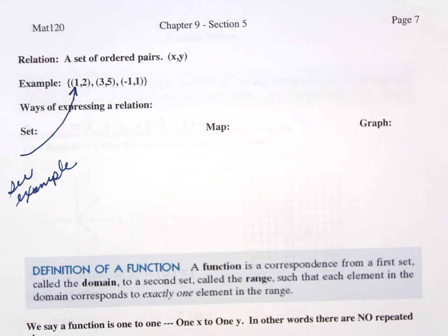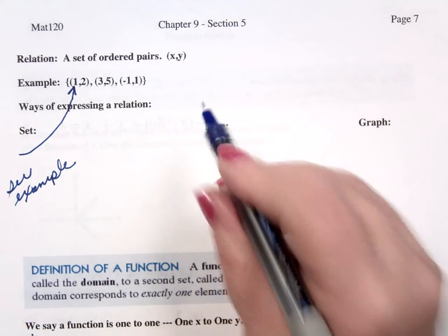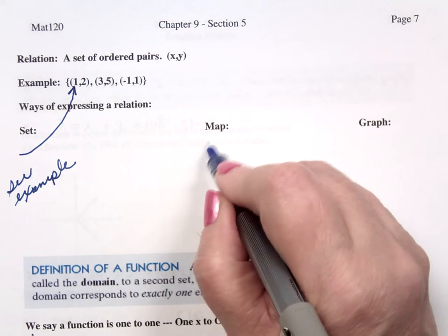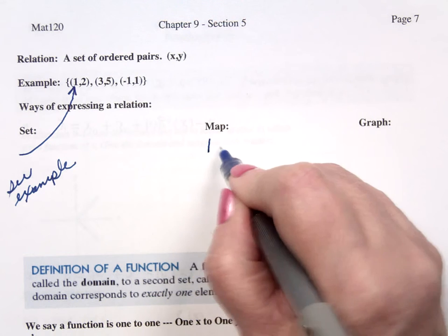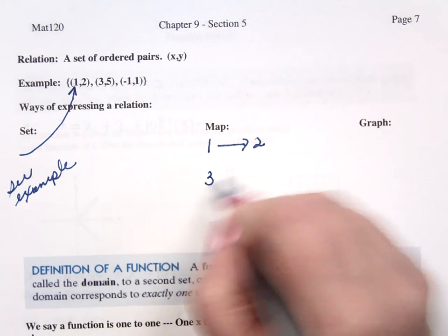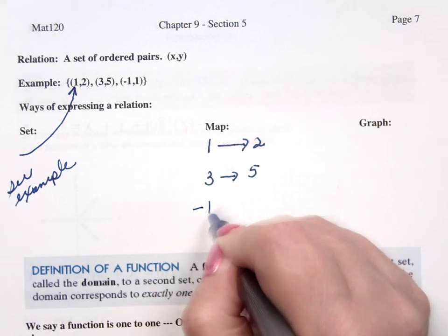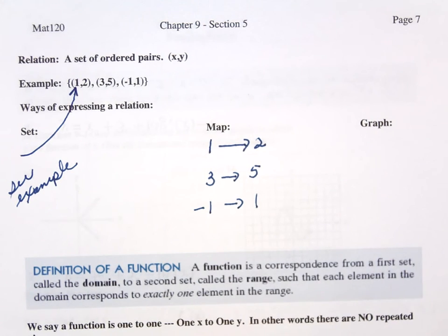I can do it as a map. A map kind of reminds you of a multiple choice question. I'm looking at 1 and 1 is related to 2, 3 is related to 5, and negative 1 is related to 1. That would be what a map is.